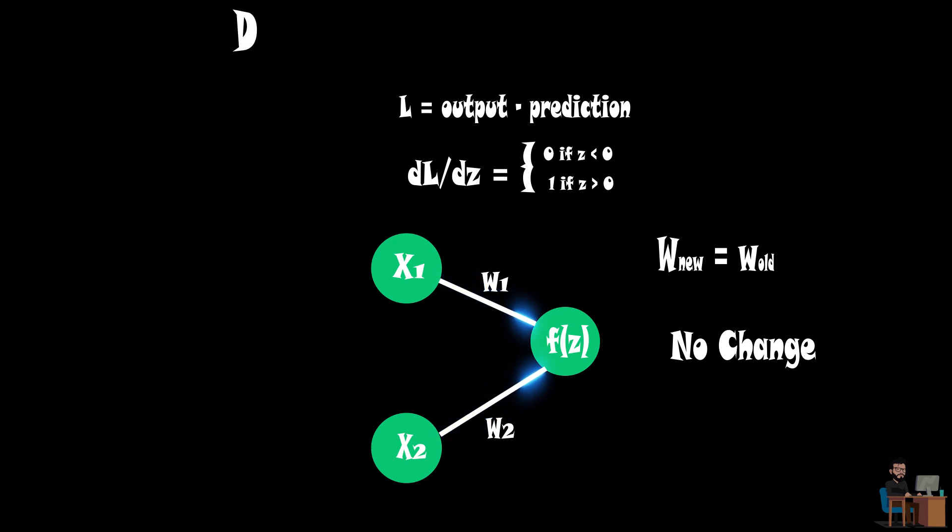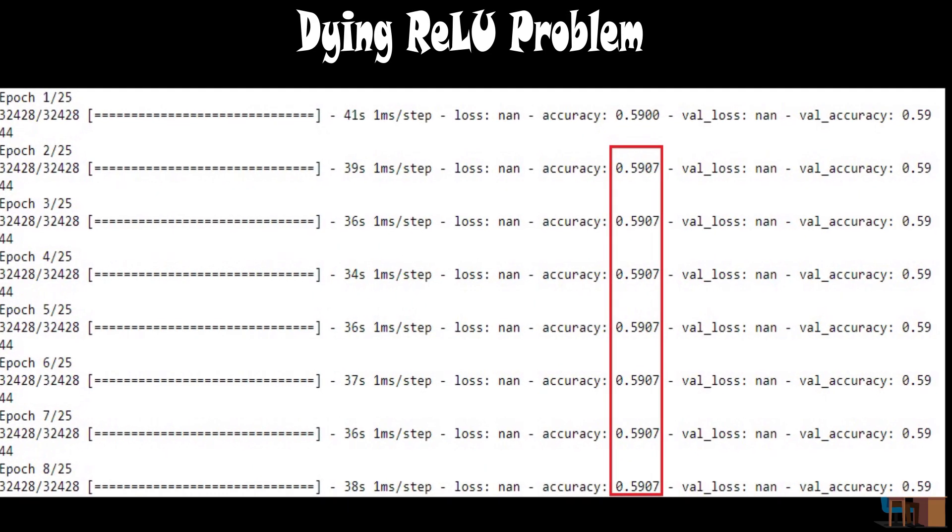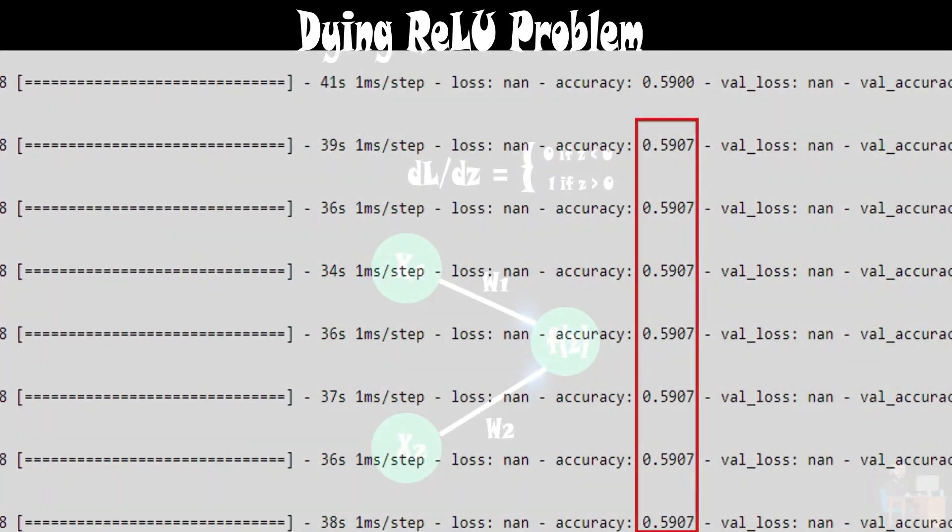This problem is known as the dying ReLU problem, in which a neuron is unable to learn or update its weight, resulting in something like this where a model didn't improve its accuracy even after several epochs.